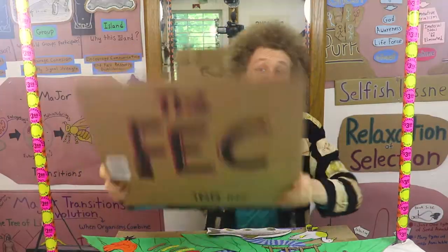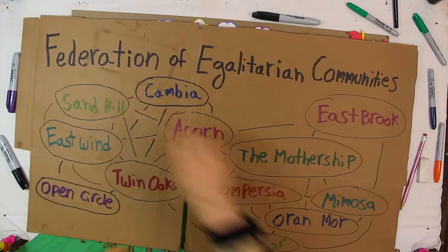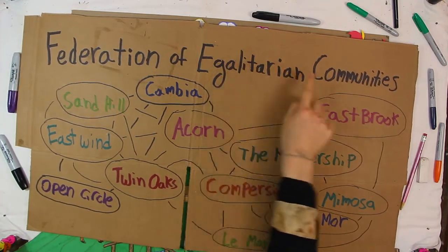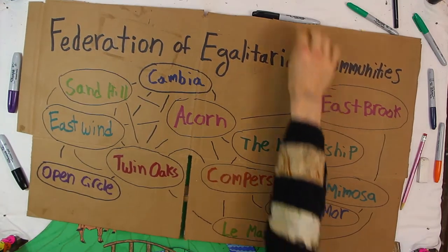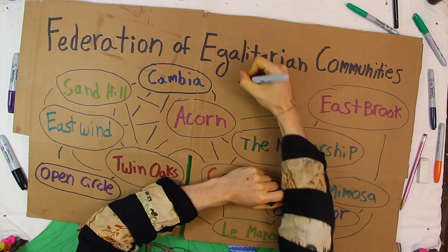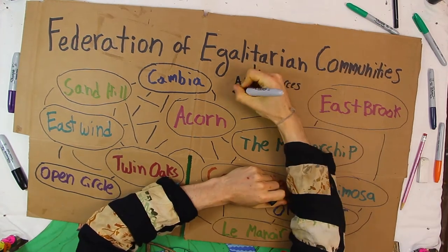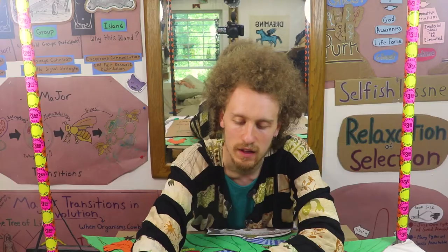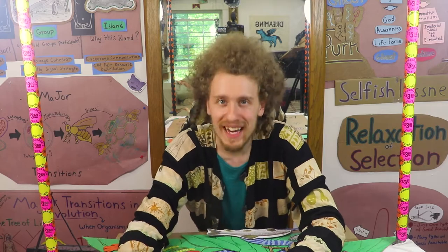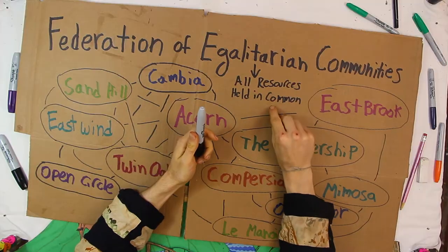There's actually this network of communes called the Federation of Egalitarian Communities, and this word egalitarian means that all the resources the communities have — whether it's land or money or human labor — all of it is held in common. Everyone has equal access.